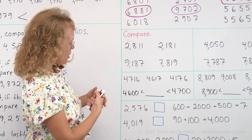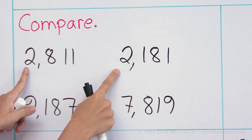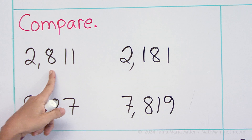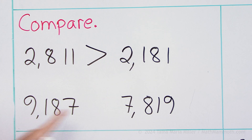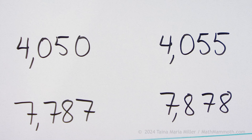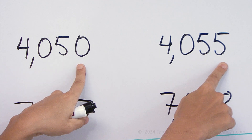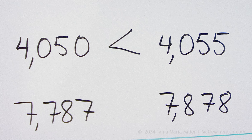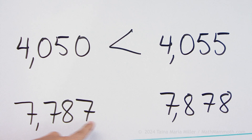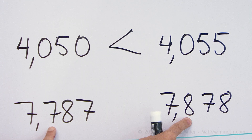The alligator mouth in between the numbers. Two thousand eight hundred eleven, two thousand one hundred eighty-one. Both of them have two thousand, but this one has eight hundred — more hundreds than that one. These are easy: nine thousand something, seven thousand something, so nine thousand something wins. Four thousand fifty, four thousand fifty-five — four thousands and then zero hundreds, five tens, but here is the difference: five is more than zero. And seven thousand seven hundred eighty-seven, seven thousand eight hundred seventy-eight — seven thousand, they are the same; seven and eight hundred — eight hundred is more than seven hundred.